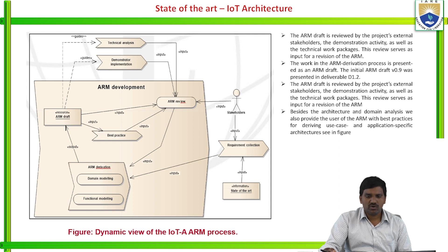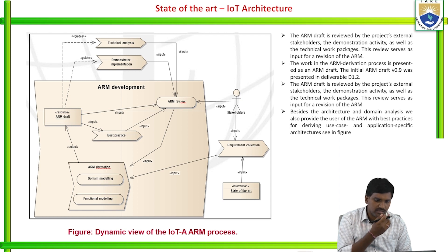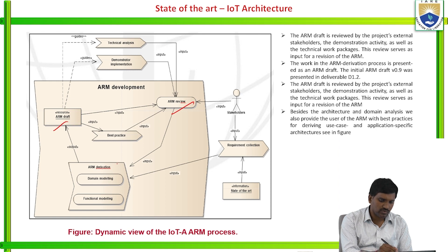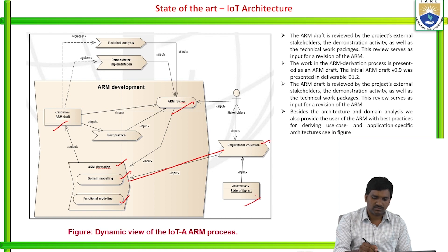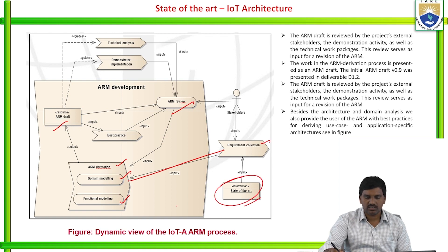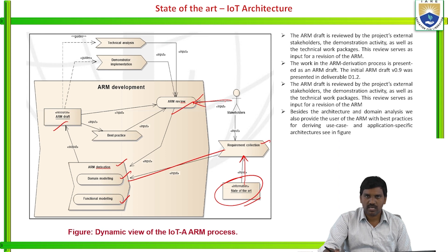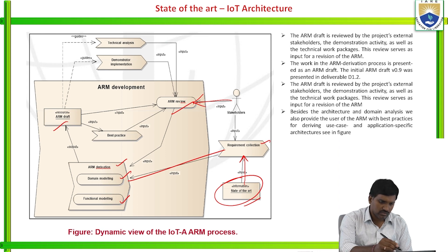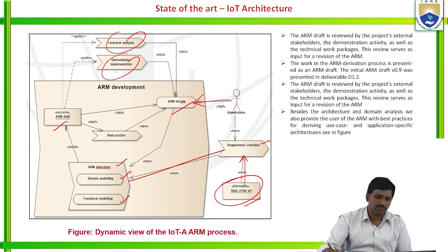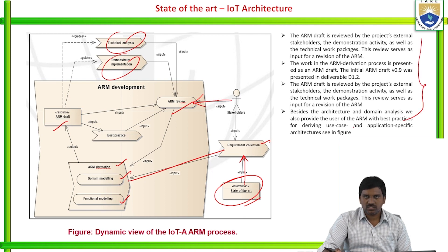This is the dynamic view of the IoT architecture ARM process. It has one ARM draft and one ARM review. With these two, we derive ARM derivation, domain modeling, and function modeling from requirement collections. Starting from the state of the art, we go for requirement collection, taking input from stakeholders and end users, followed by technical analysis and demonstration of implementation.